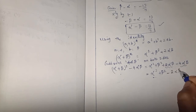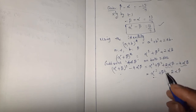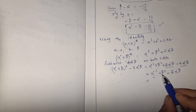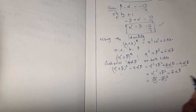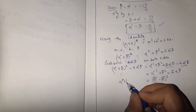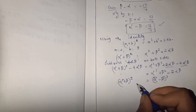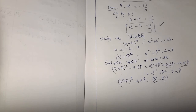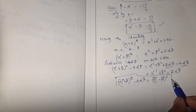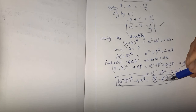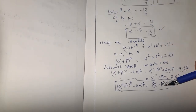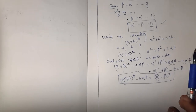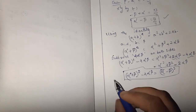After subtracting 4 alpha beta on both sides: (alpha plus beta) whole squared minus 4 alpha beta equals alpha squared plus beta squared minus 2 alpha beta. The right side can be rewritten using the identity a squared plus b squared minus 2ab, which equals (alpha minus beta) whole squared. That is why we converted beta minus alpha into alpha minus beta earlier.